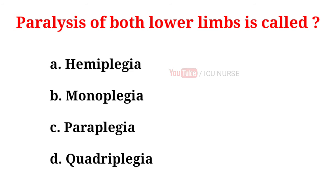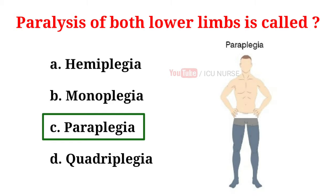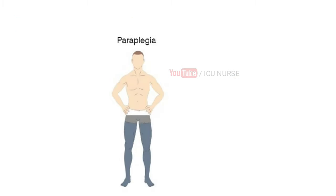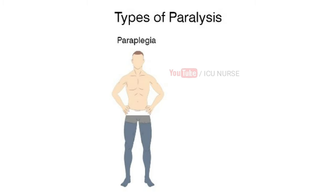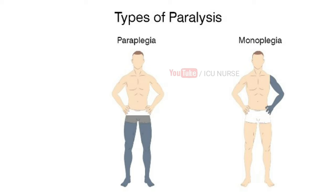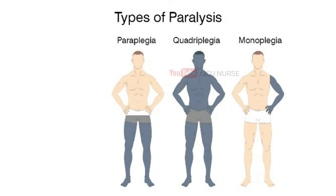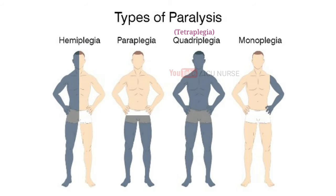Paralysis of both lower limbs is called: A. Hemiplegia, B. Monoplegia, C. Paraplegia, D. Quadriplegia. And the correct answer is C. Paraplegia — complete paralysis of the lower half of the body including both legs, usually caused by damage to the spinal cord. Other types include Monoplegia (paralysis of one limb), Quadriplegia/Tetraplegia (paralysis of all four limbs), and Hemiplegia (paralysis of one side of the body).